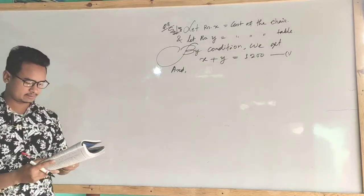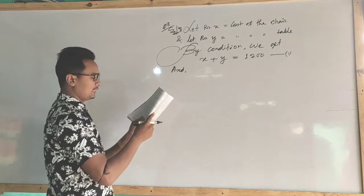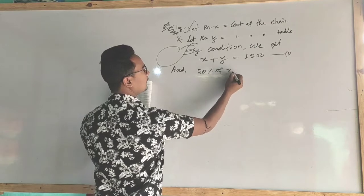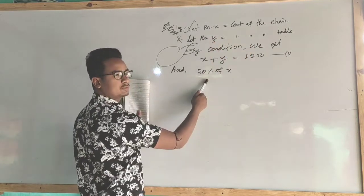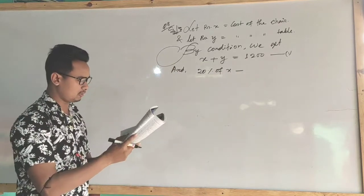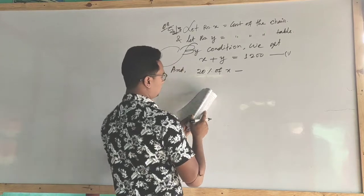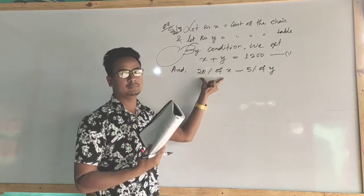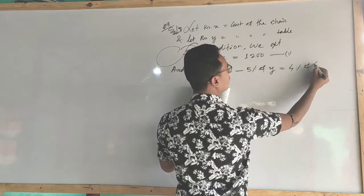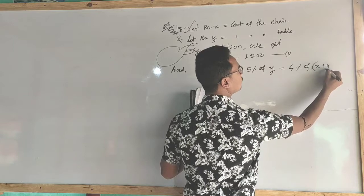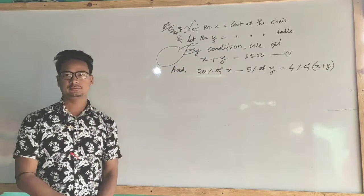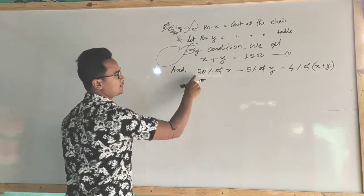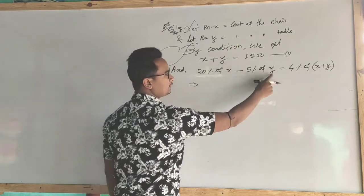Another equation can be applied like this: 20% of X minus 5% of Y equals 4% of (X plus Y). So we can set up: 20% of X minus 5% loss of Y equals 4% of the whole X plus Y.